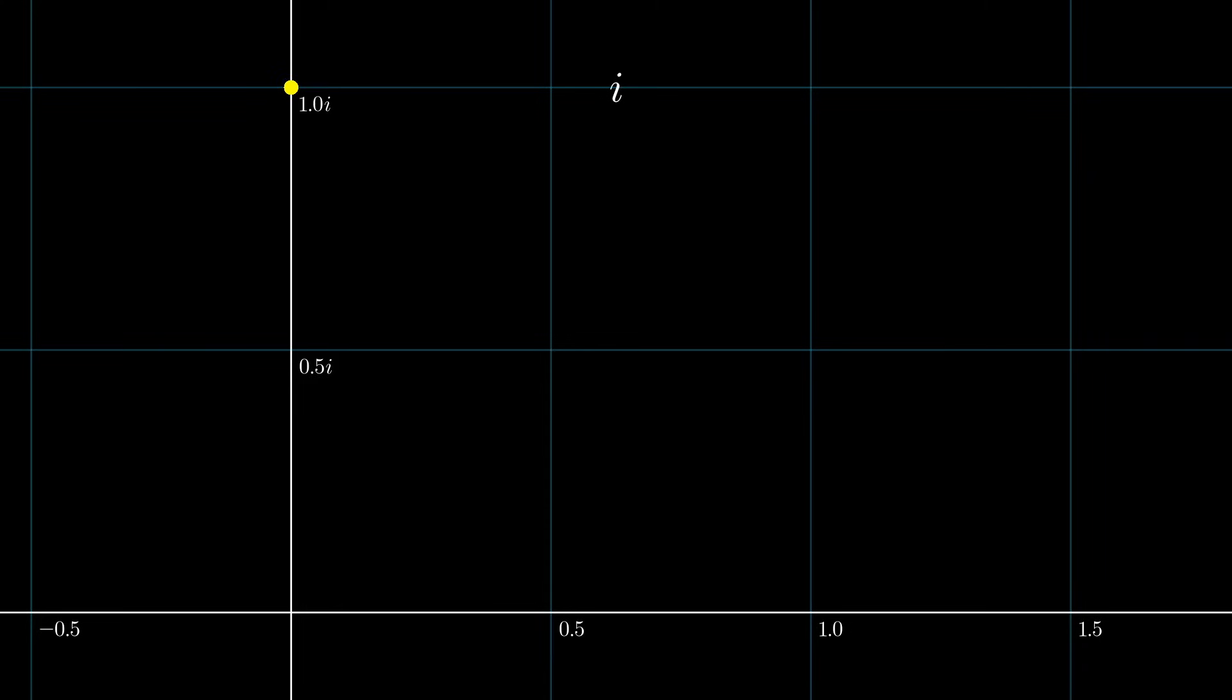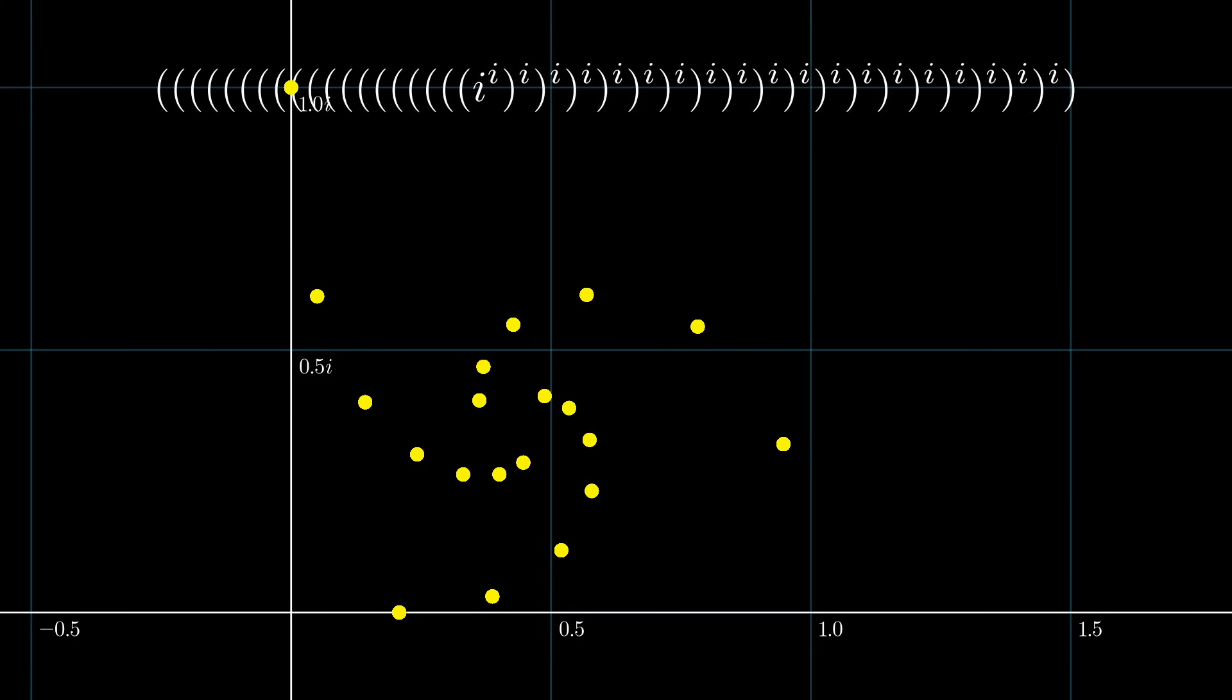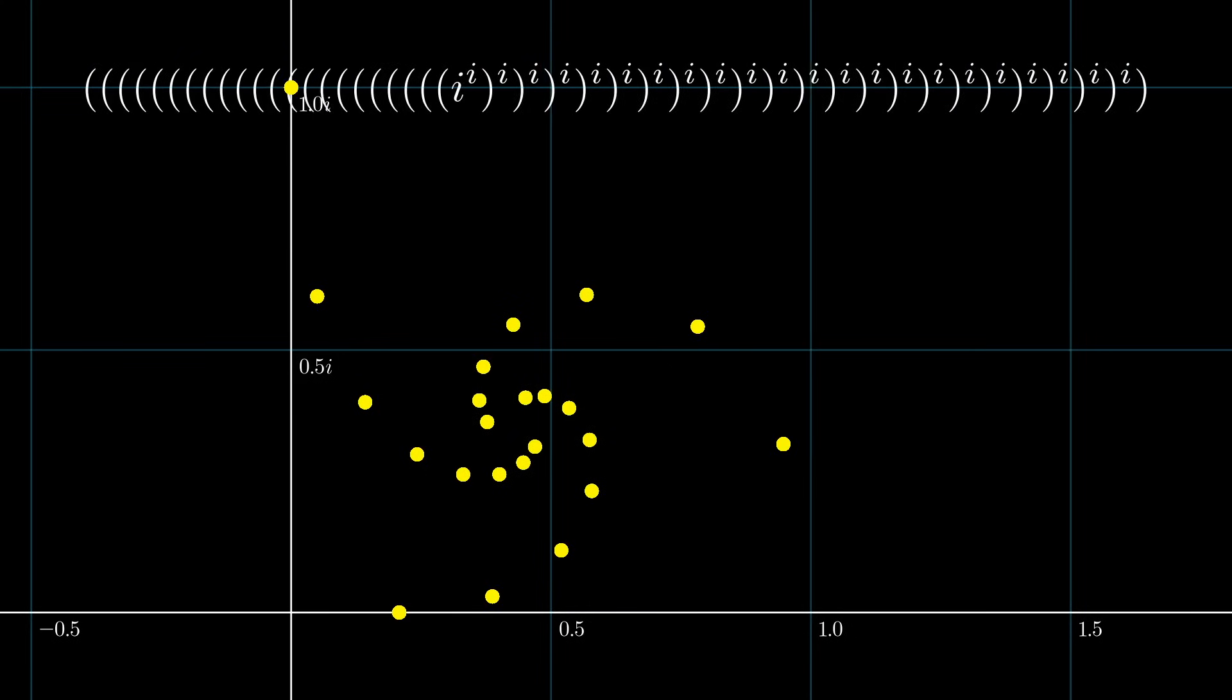we can get the next piece of the tower by plotting i to the i, then i to the i to the i, and so on. And the higher we transcend this tower, the more we see it spiraling into one spot.